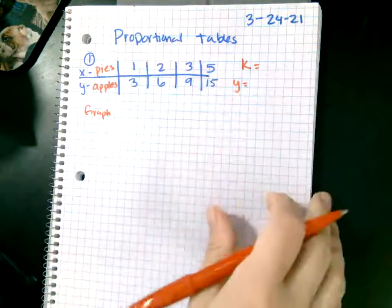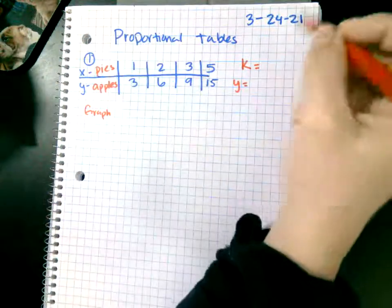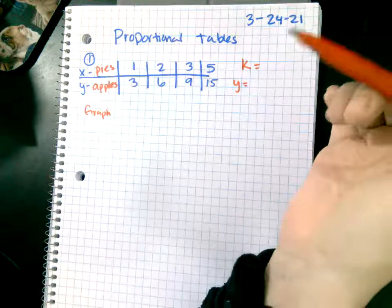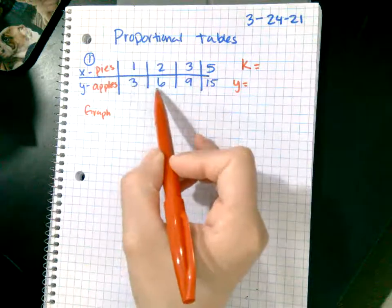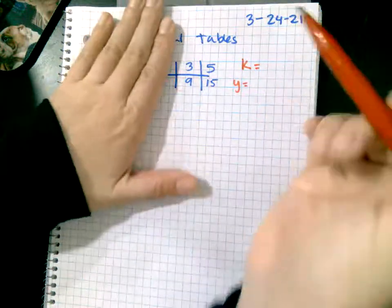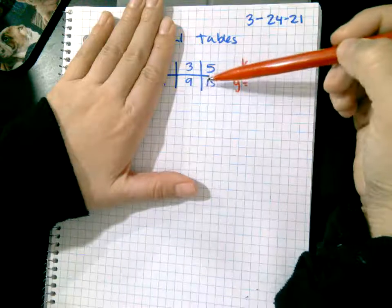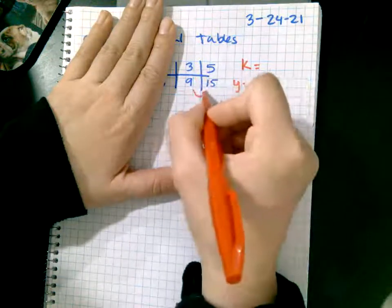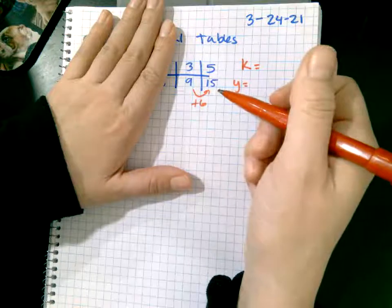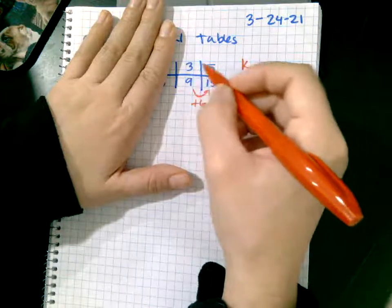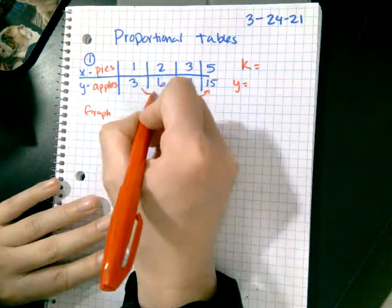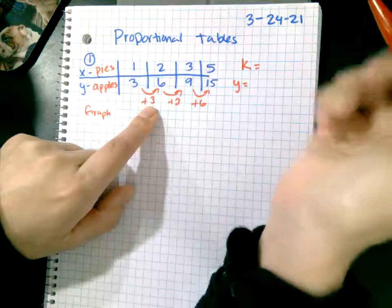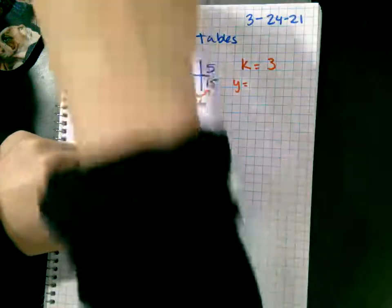How do you determine k given the table? There's a couple of different ways. If these numbers go in order then you can look at what you're adding. I'm adding three, but be careful if the top numbers don't go in order, you can't just say I'm adding six, that's my unit rate.